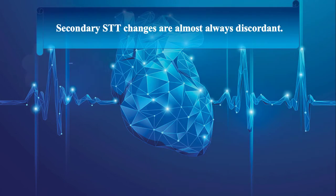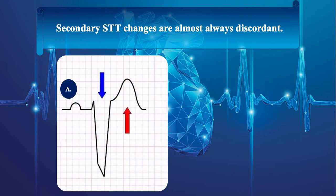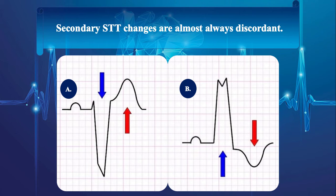Additionally, it must be noted that secondary ST-T changes are almost always discordant. This means that ST-segment and T-wave move in opposite direction of QRS complexes. So, negative QRS complex causes ST-elevation and upright T-wave, while positive QRS complex leads to ST-depression or T-wave inversion.